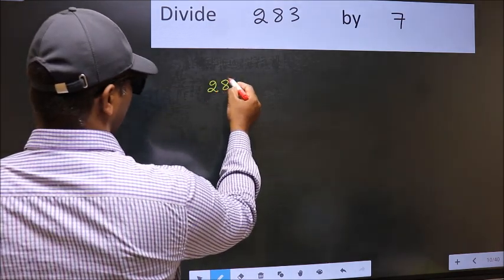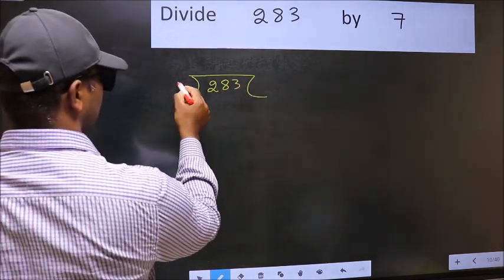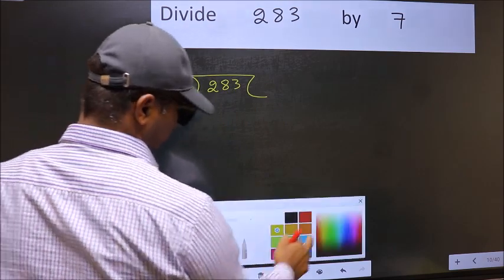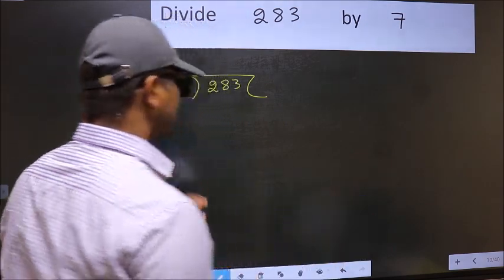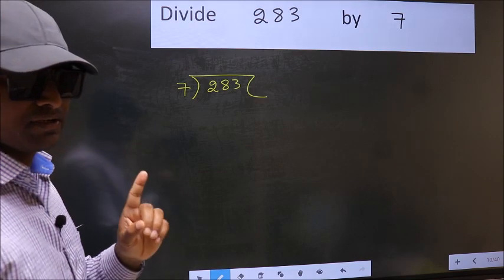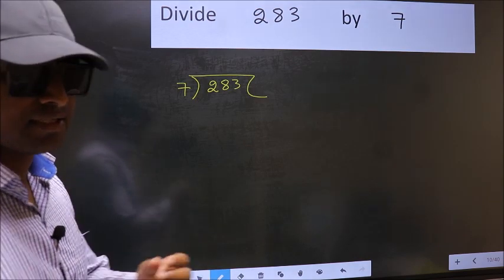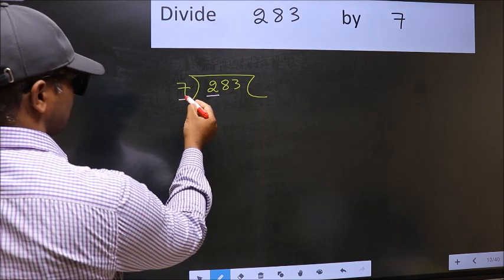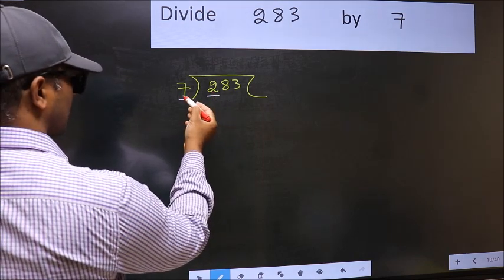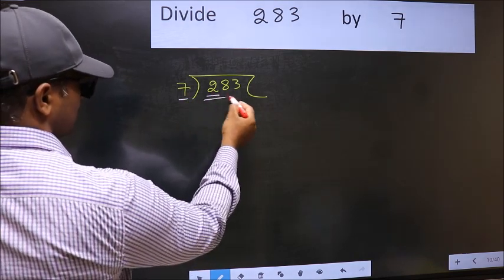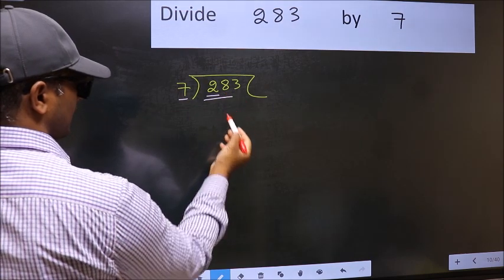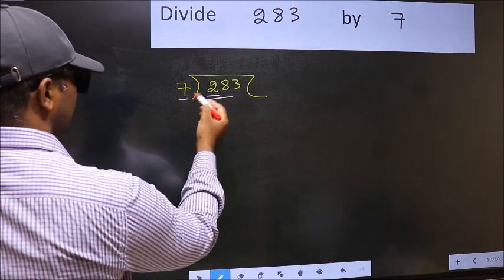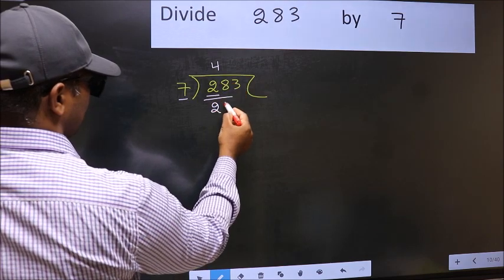283 and 7 here. This is your step 1. Next, here we have 2 and here 7. 2 is smaller than 7, so we should take two numbers, 28. When do we get 28 in the 7 table? 7 fours 28.